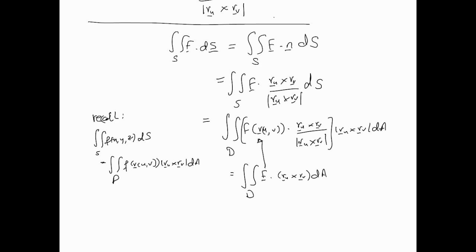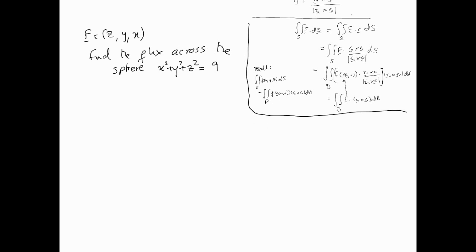This simplifies to the double integral over region D of F dot (r_u cross r_v) dA, where F is the vector field after parameterization. Let's look at an example.